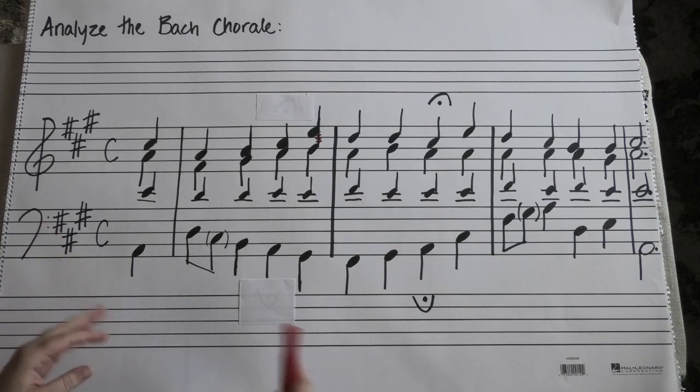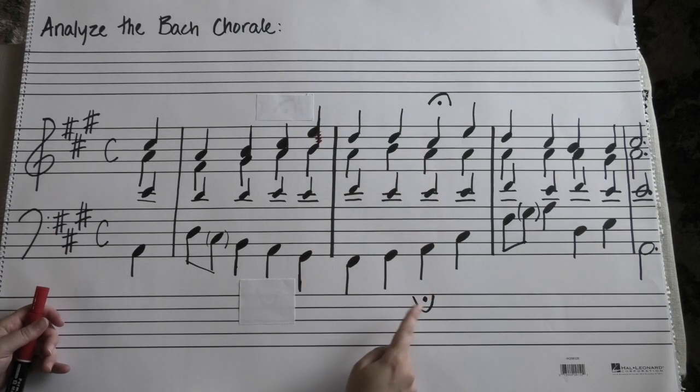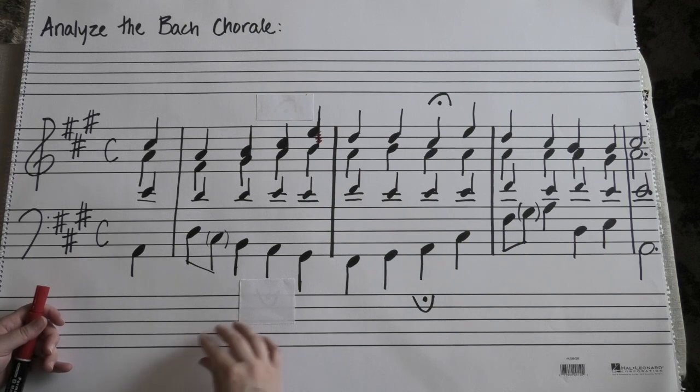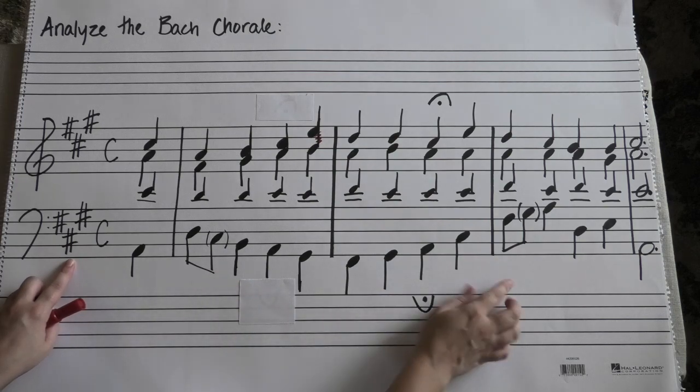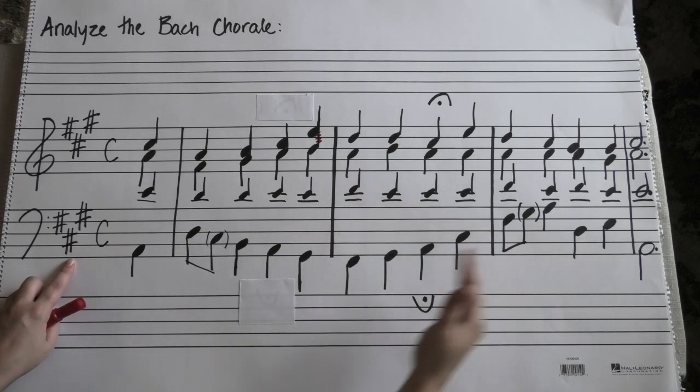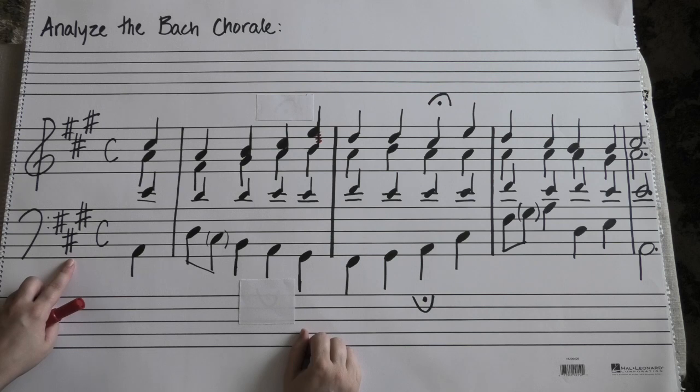So we're just doing this little section, but that's why there's this fermata here, very common. Go look at Bach chorales, you'll see what I'm talking about. But let's see if we can't go through here. We're in the key of A, A major. Let's see if we can't go through here and analyze these four part chords using your Roman numerals. I'm going to give you a chance to pause.